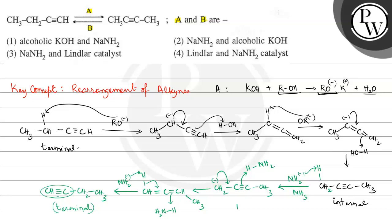B is NH2 minus or we can say NaNH2. So A is alcoholic KOH and B is NaNH2 in NH3.